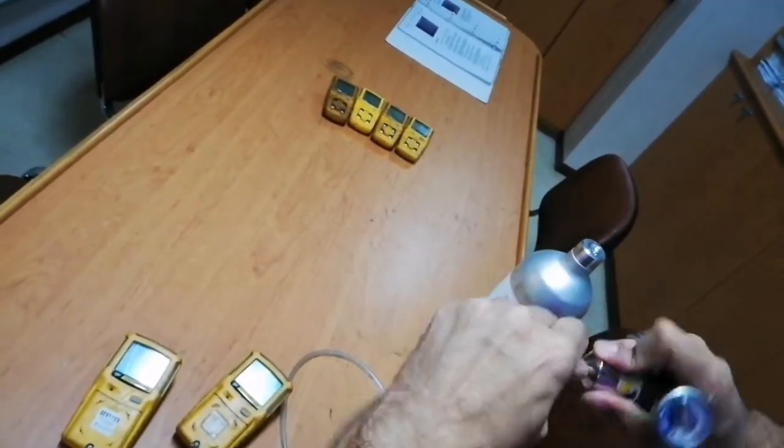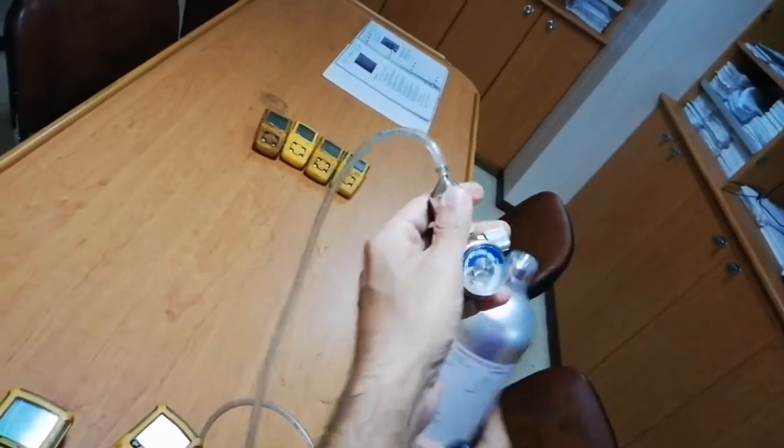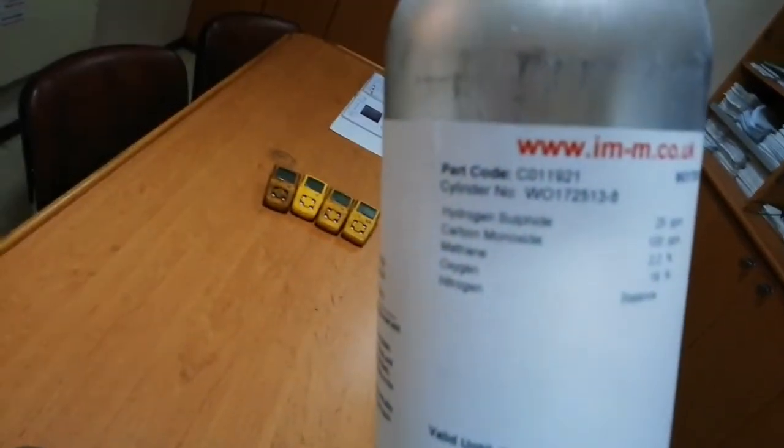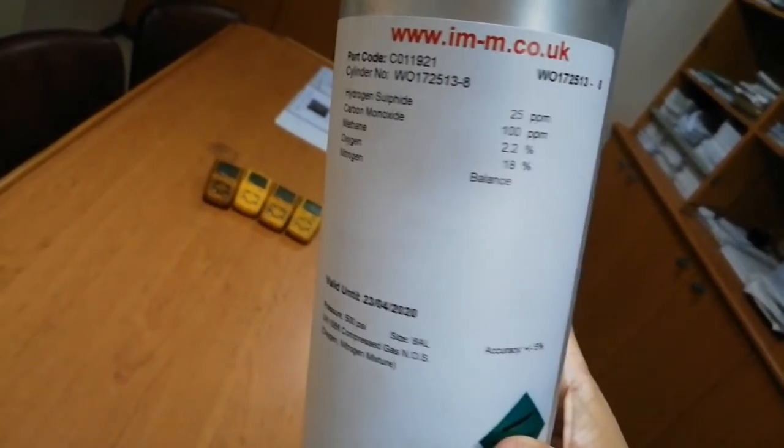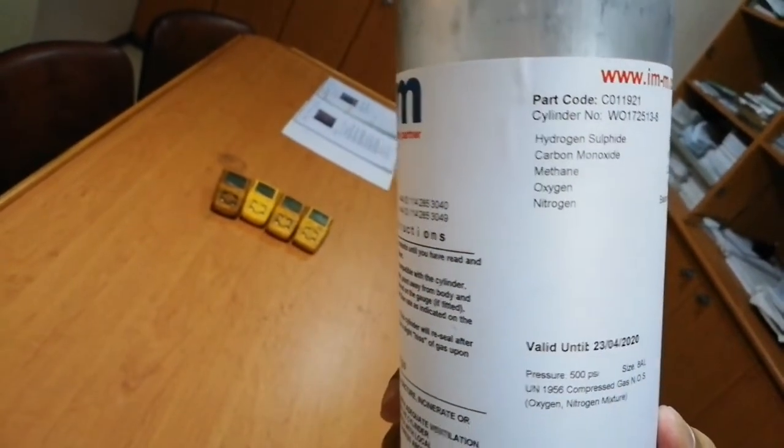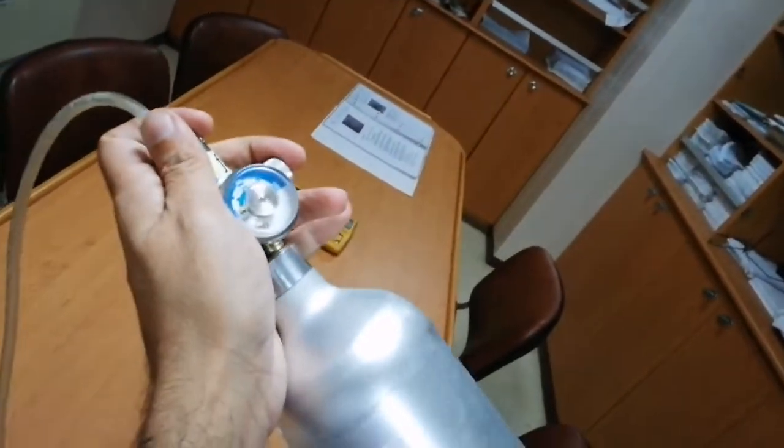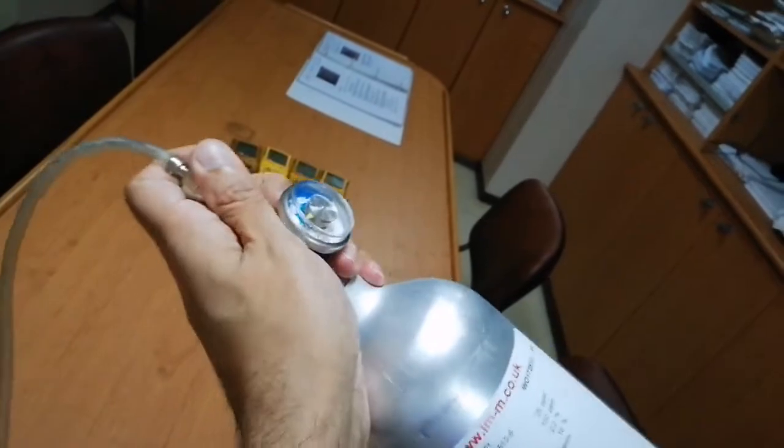We'll fix the regulator to the span gas cylinder. This span gas cylinder contains hydrogen sulfide 25 ppm, carbon monoxide 100 ppm, methane 2.2 percent for measuring LEL, and oxygen 18 percent. All balance is in nitrogen.